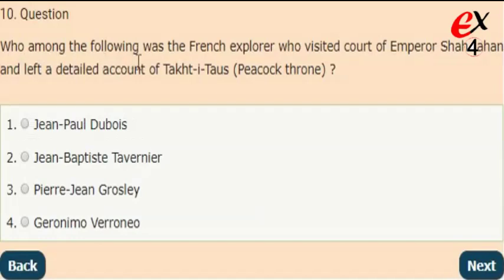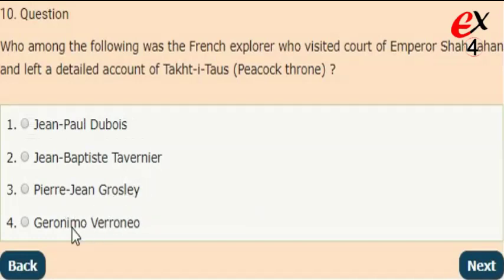Last question: who among the following was the French explorer who visited the court of Emperor Shah Jahan and left a detailed account of the Tak-e-Taus, that means the Peacock Throne? The answer is option 2, Jean-Baptiste Tavernier.